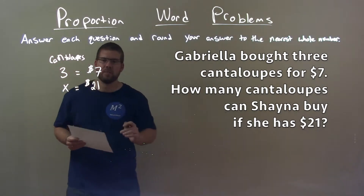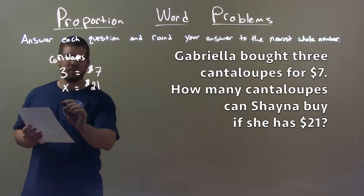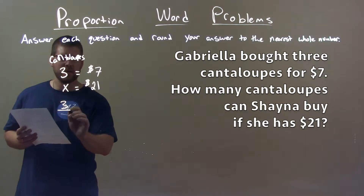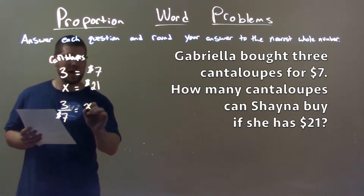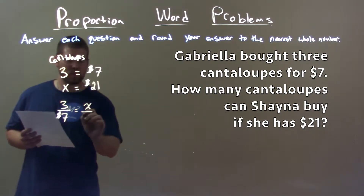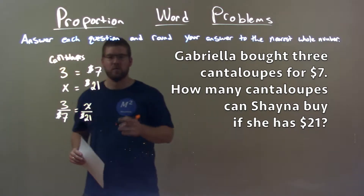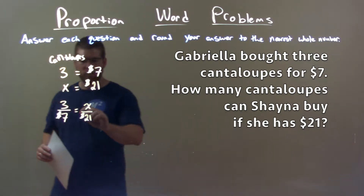So let's go set up our proportion. We have 3 to $7 is equal to X to $21. And now let's solve for that X.